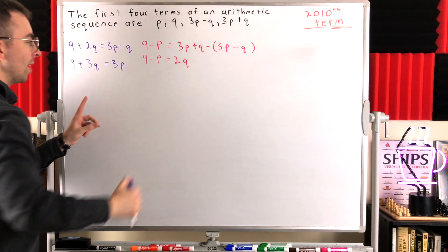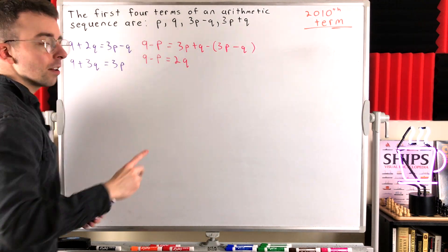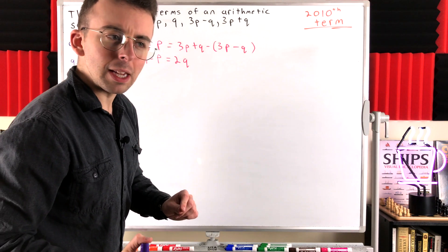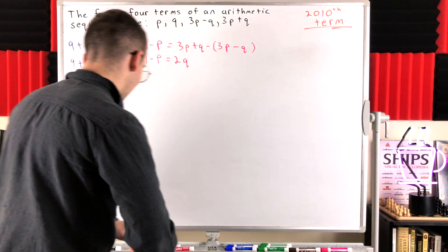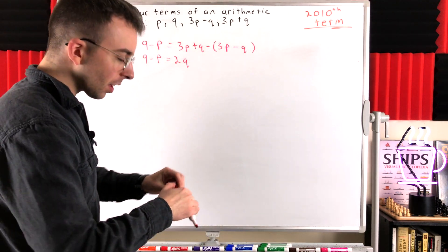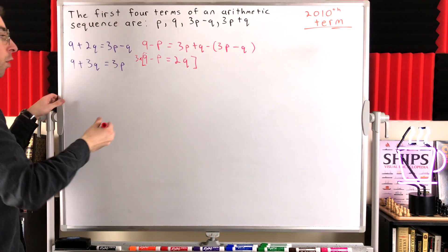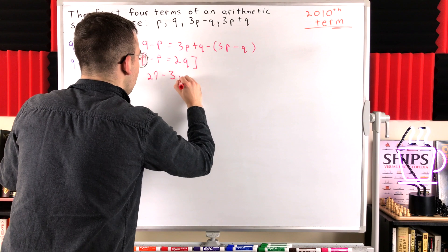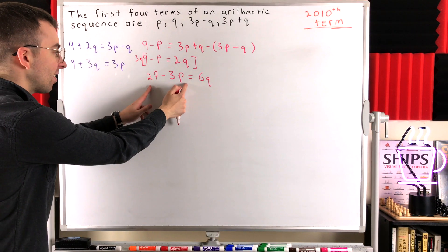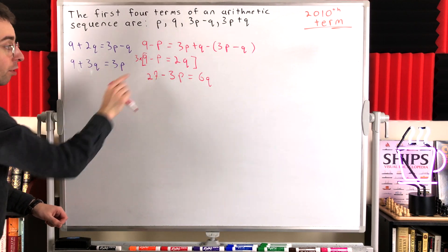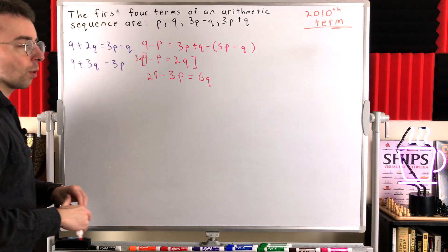Now we've got this equation and this equation. If we multiply both sides of this one by 3, then we'll have 27 minus 3P, and we could combine that equation with the other so that the P's cancel out, then solve for Q, and plug it back in to solve for P. Let's do that. We multiply both sides of the equation by 3: that gives us 27 minus 3P equals 6Q. Now we can add this side of that equation so that 3P minus 3P cancels, and then we can add 6Q to the other side of this equation, and then we solve for Q.